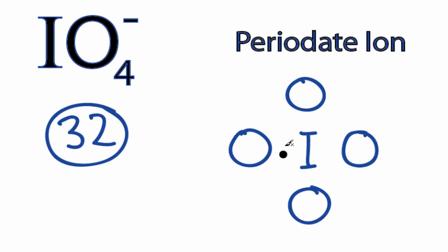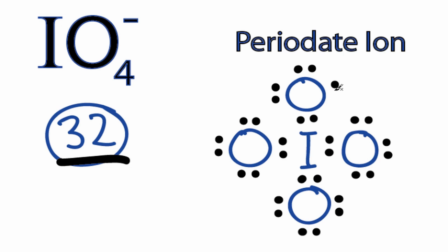We'll put two electrons between the atoms to form the chemical bonds, and then we'll go around the outside to fill the octets on the oxygen until we use all 32 valence electrons. So we have 8, 10, 12, and 32.